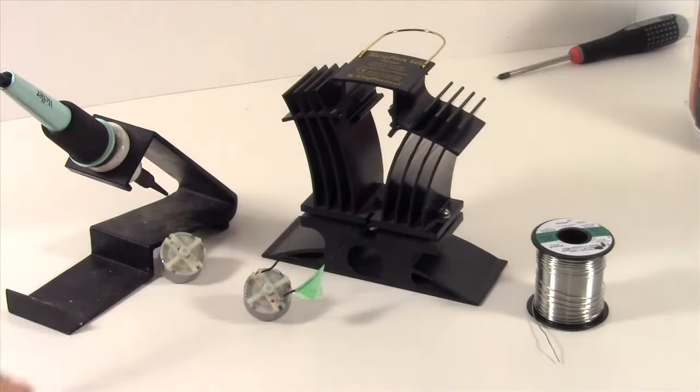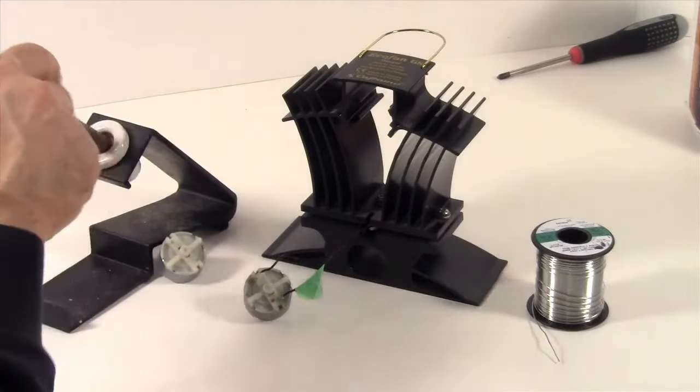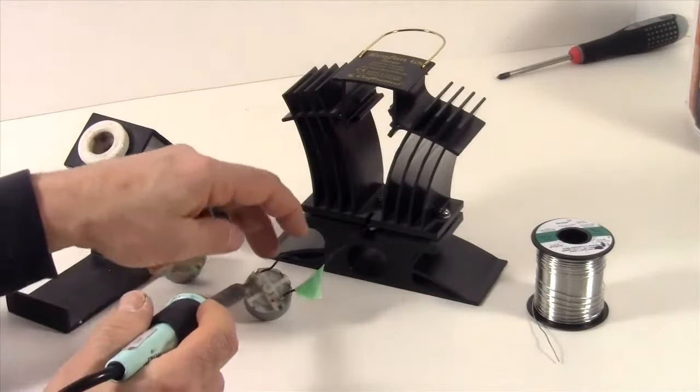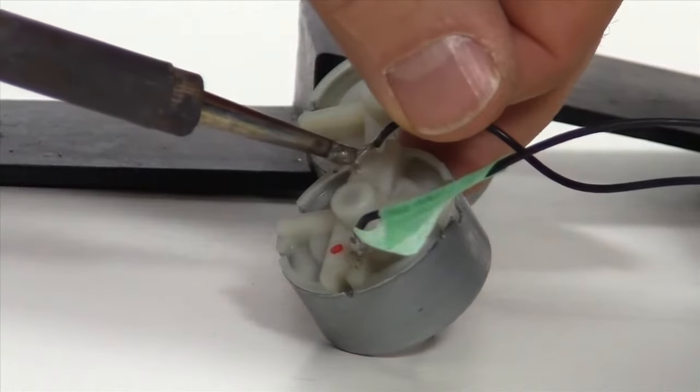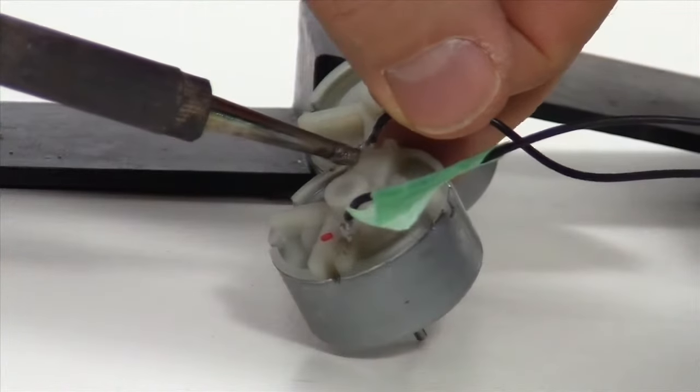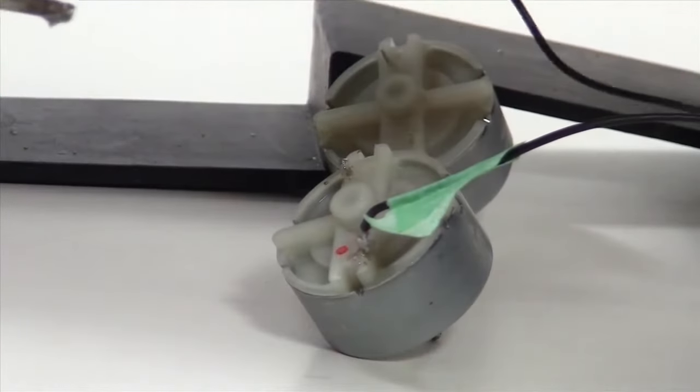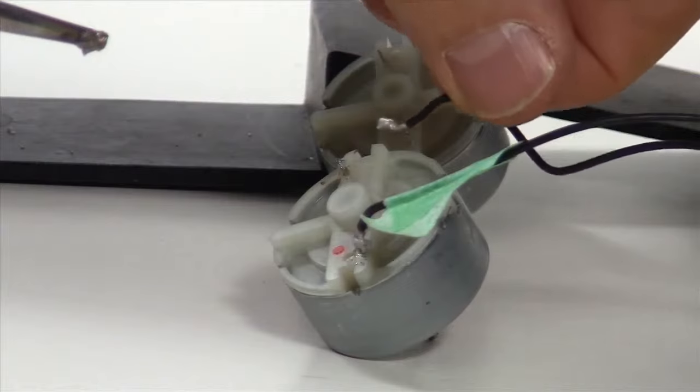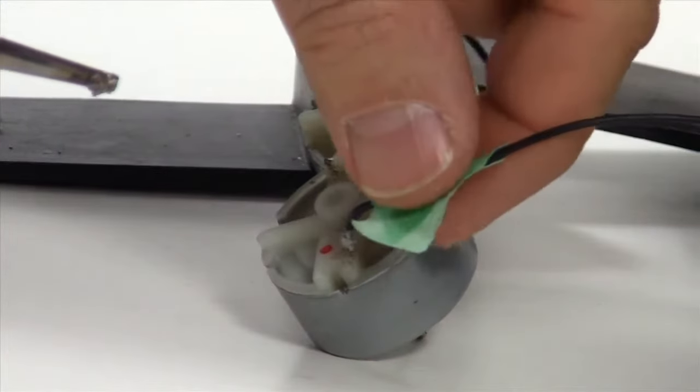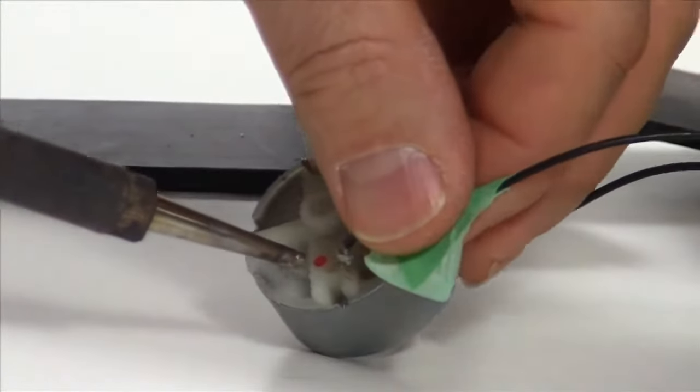Now to remove these wires, we're going to take our soldering gun and apply just a little bit of heat to these terminals. Now we don't want to apply heat for very long, just enough to melt the solder to loosen the wire. No more than five seconds.